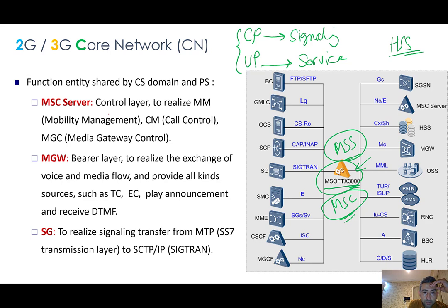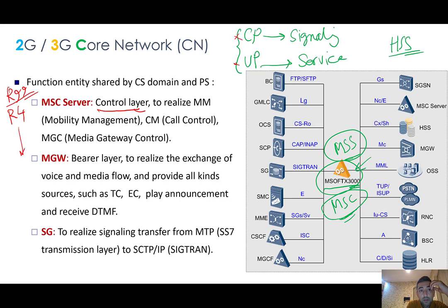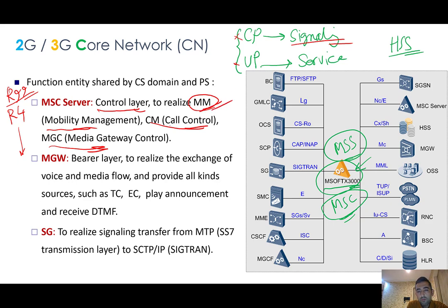The MSC Server is entirely for the control plane. From Release 4 onwards — in Release 99 it was responsible for both planes — the MSC Server is just for signaling and the control plane, to realize mobility management, call control, and media gateway control. In all mobile networks we must have a node for mobility management, because the network is mobile — that's why you see this node across all generations.